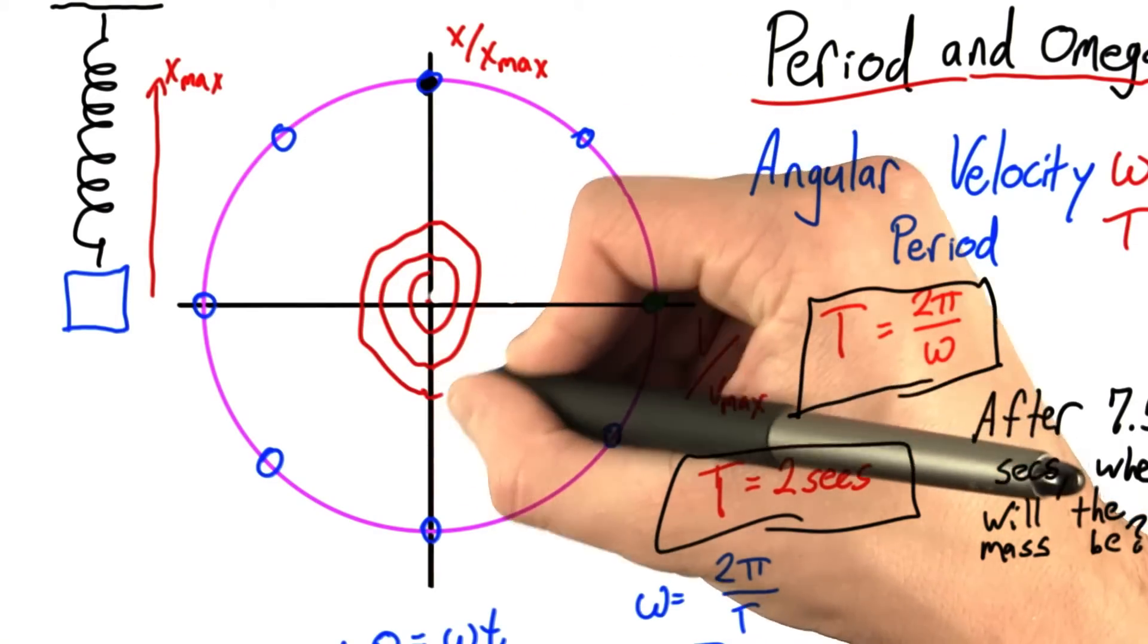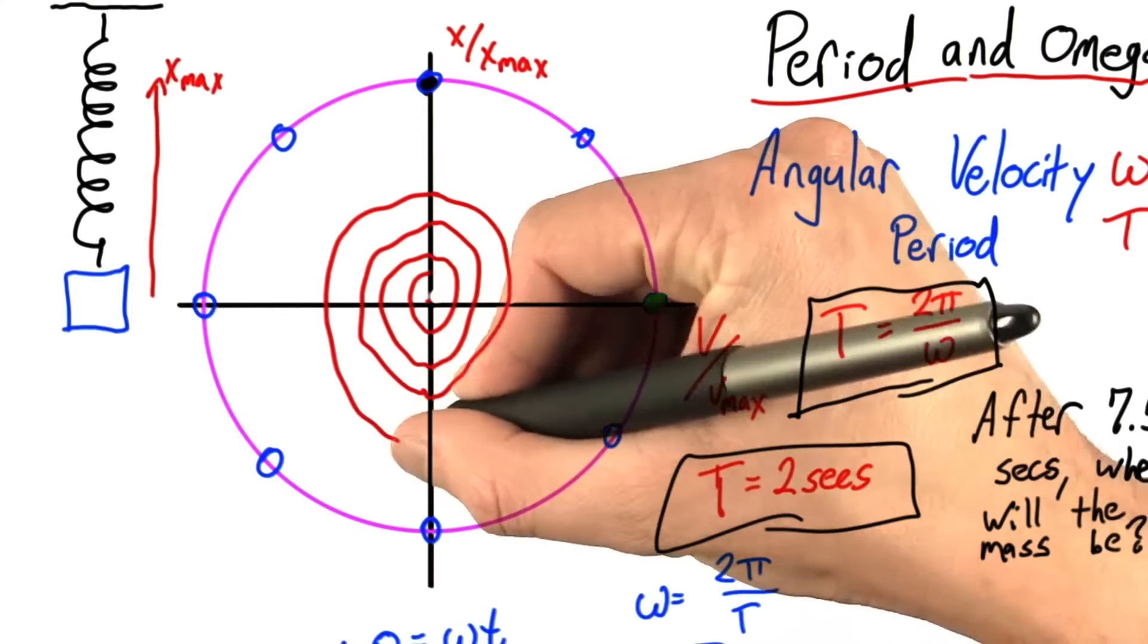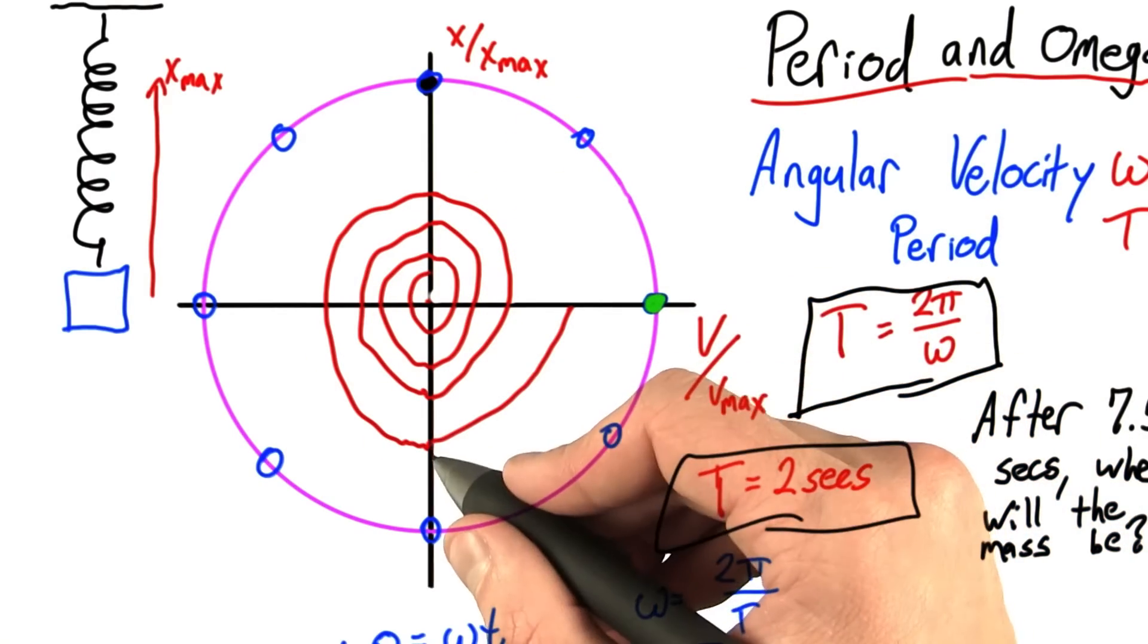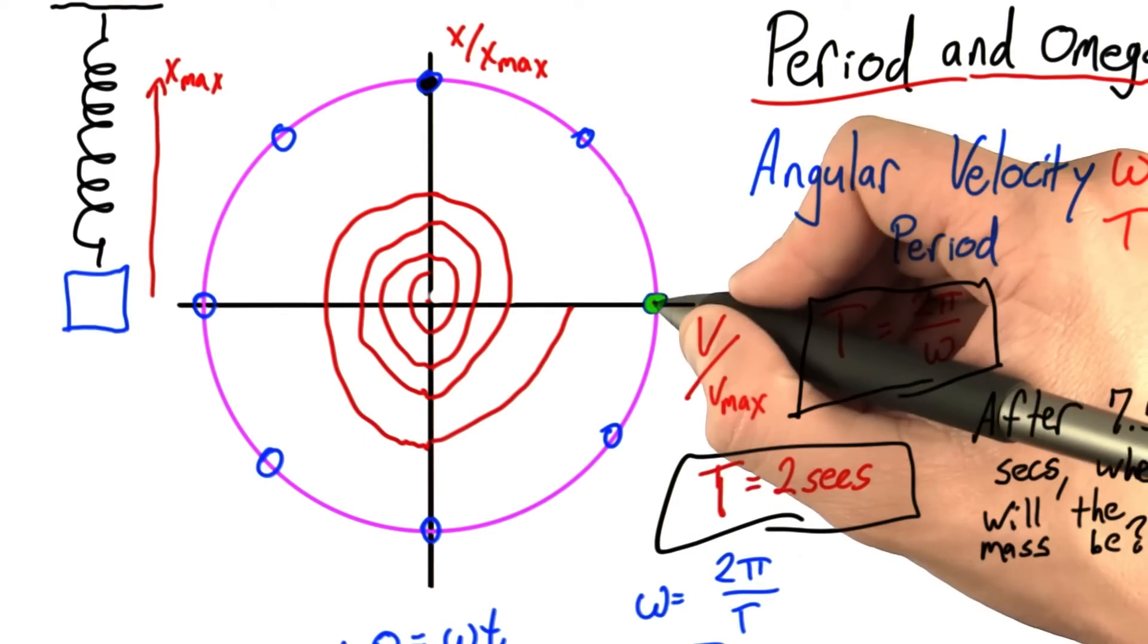4, 5, 6, and 7. But it was 7.5 seconds, so that extra π/2 radians, and again, that puts us right here.